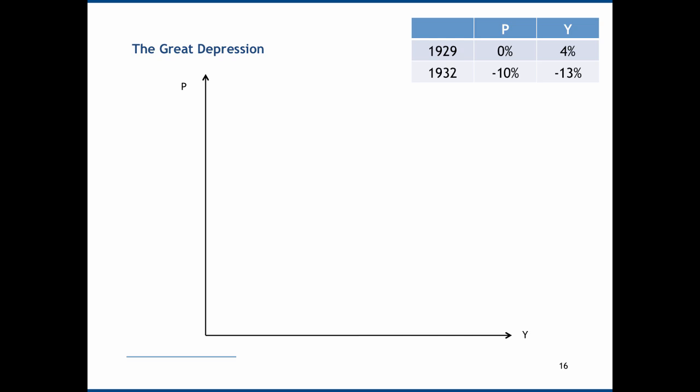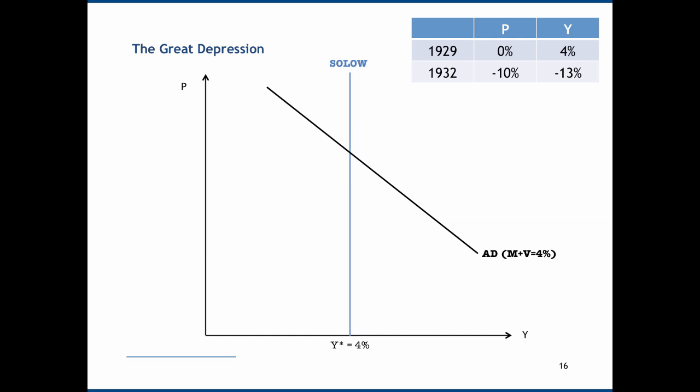The last thing I want to do is look at a historical example — the data surrounding the Great Depression. In 1929, inflation was 0% and real GDP growth was 4%. Let's imagine this is consistent with the Solo curve, and that the underlying factors of production were consistent with 4% real GDP growth. We can have an aggregate demand curve that sums to 4%, so inflation is therefore 0. This is reasonable because sustained inflation is a relatively modern phenomenon, so it's reasonable to think that inflation expectations in the 1920s would be essentially 0. We can label this as our starting point: 1929.